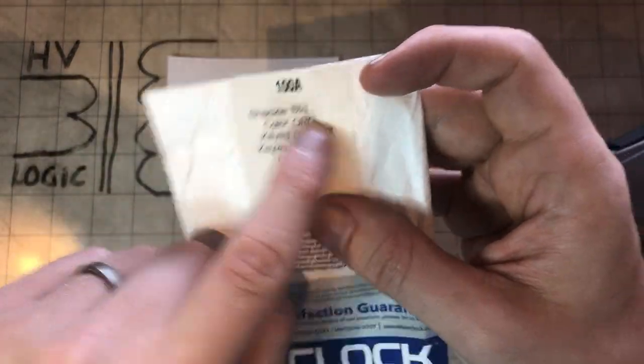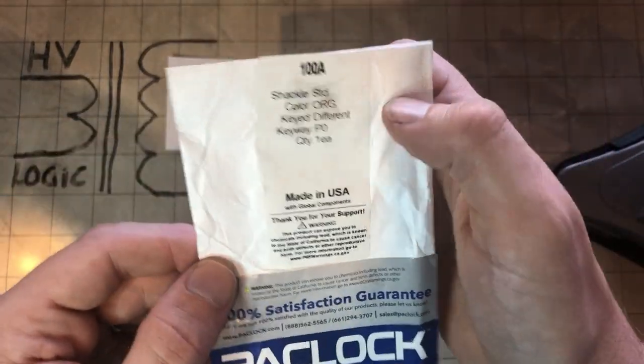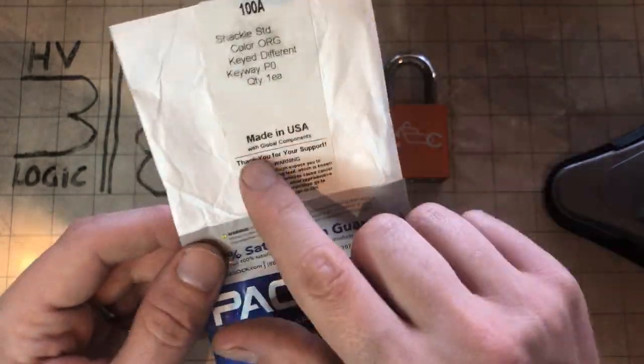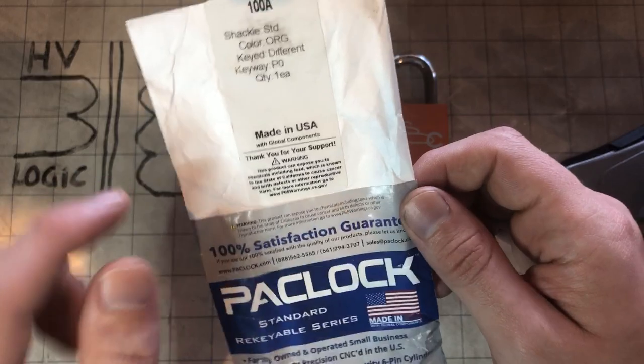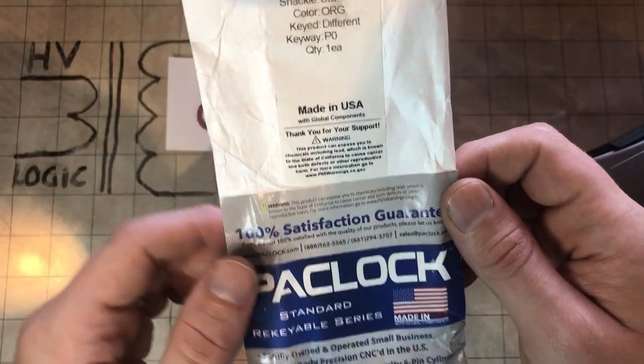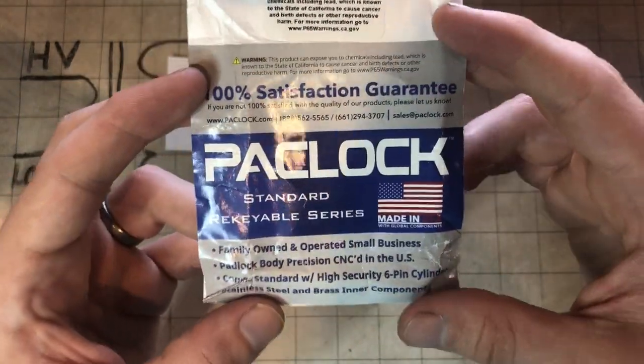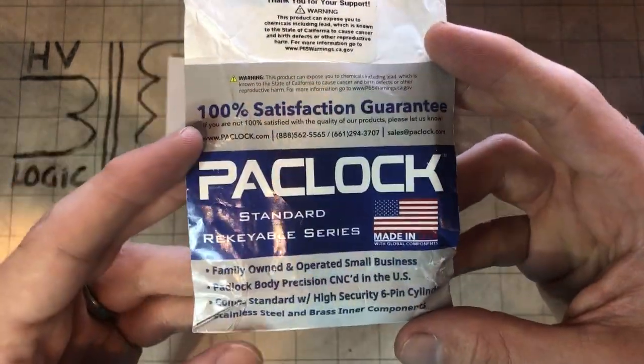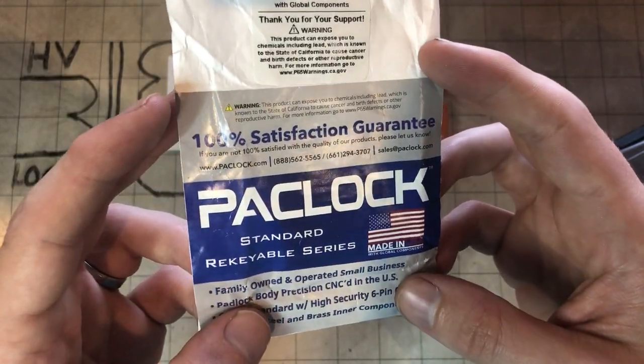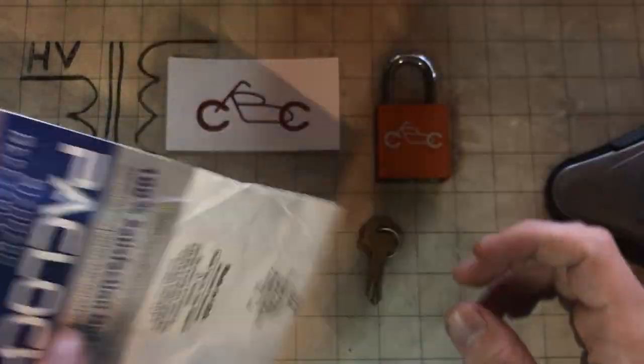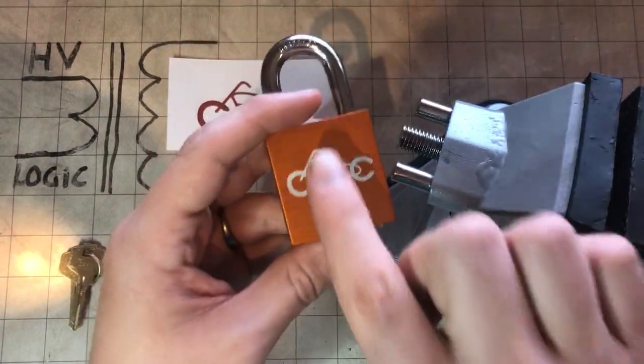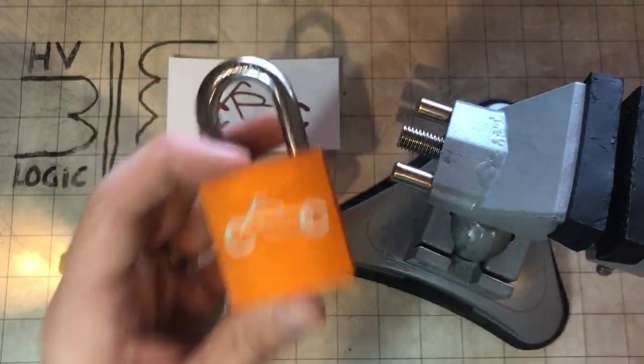The actual padlock body is perfect, no issues there. This is just the packet it comes in. It's 100A standard shackle, it's orange. They're all different colors, so luck of the draw what you get. Made in the USA with global components. They're very proud of the fact that they're made in America, Pac Lock, and they reckon they're great. I reckon they're pretty fine.